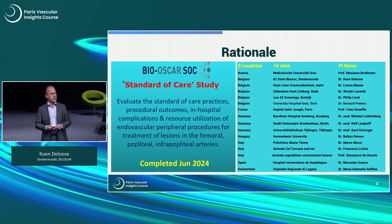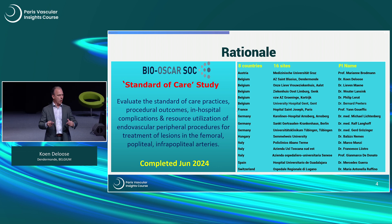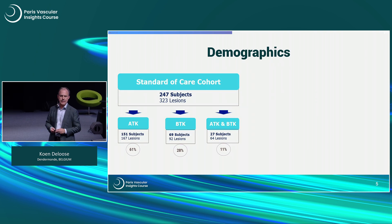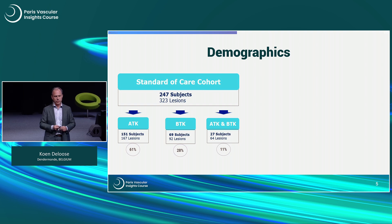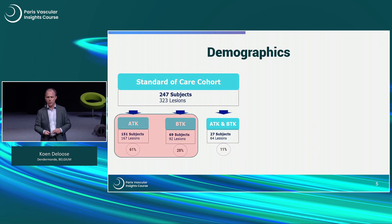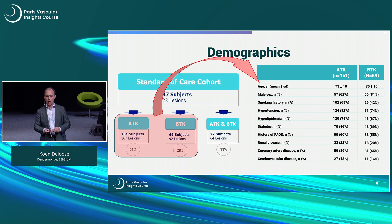Eight countries and a lot of centers were gathering and collecting all kinds of data related to the standard of care of procedures. 247 subjects were enrolled in this analysis: 150 in the above-the-knee segment, 69 in the below-the-knee area, and 27 in a combination of both. We are focusing on just these two main cohorts.